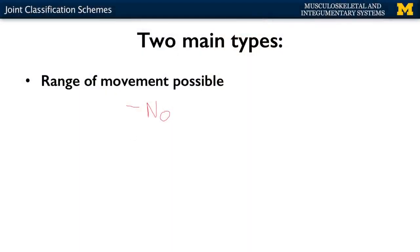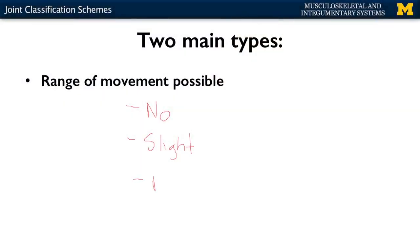The second type is slight movement. These are going to be in areas where you don't want a lot of movement, specifically at the distal ends of long bones — these are referred to as amphiarthrotic. And lastly, you're going to have freely movable joints, which are those synovial joints also associated with the articular capsules we discussed in terms of joint structure.